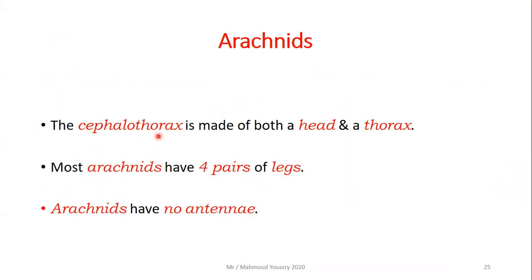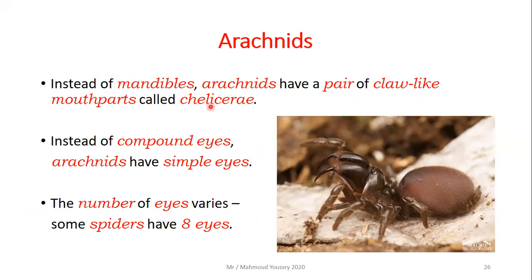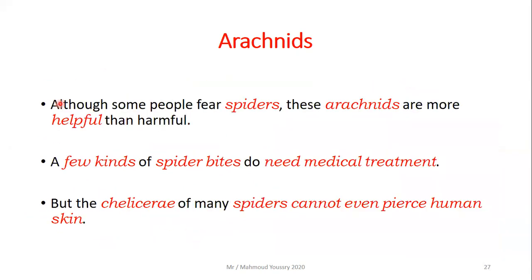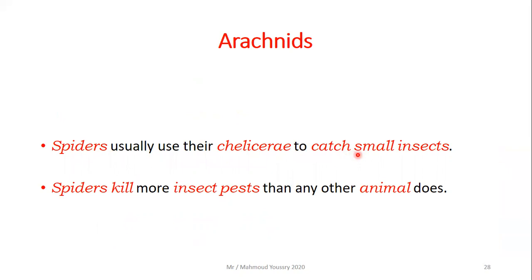Most arachnids have four pairs of legs and no antennae. Instead of mandibles, arachnids have claw-like mouth parts called chelicerae. Instead of compound eyes, they have simple eyes, though the number varies — some spiders have eight eyes. Although some people fear spiders, they are more helpful than harmful; spiders use their chelicerae to catch small insects and kill more insect pests than any other animal.